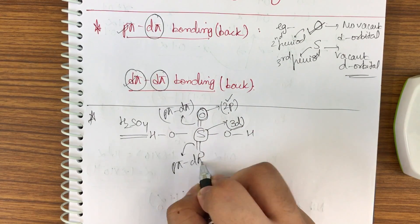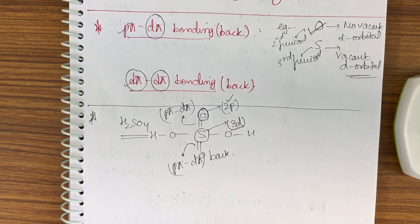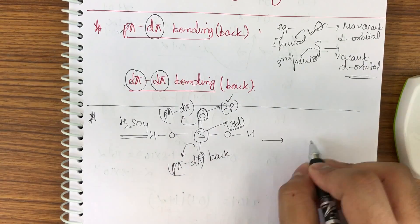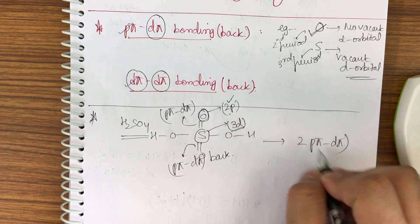So this will be a ppi-dpi backbonding. Similarly for this, it will be ppi-dpi backbonding. So how many ppi-dpi bonds do I have? Two ppi-dpi.